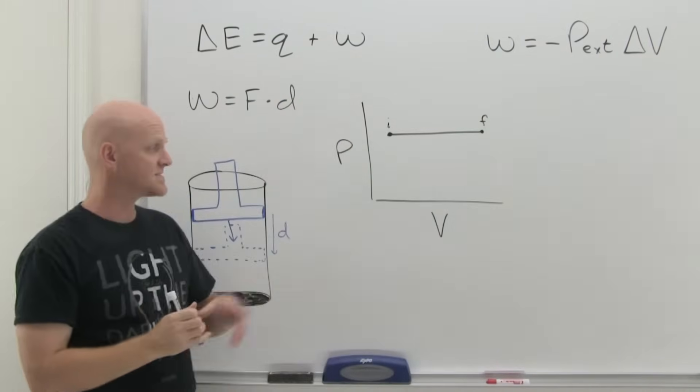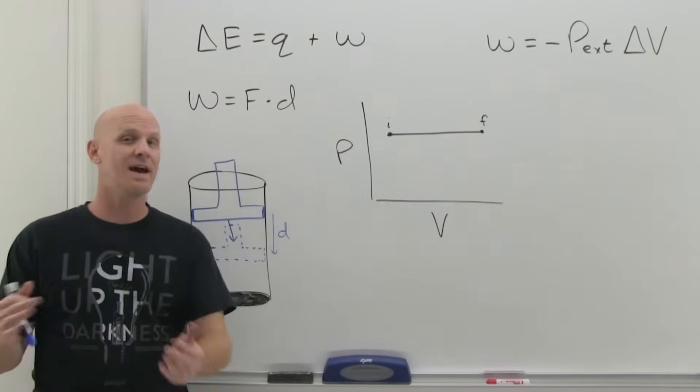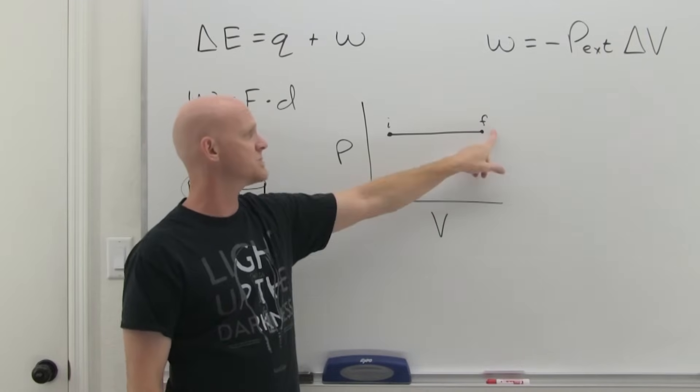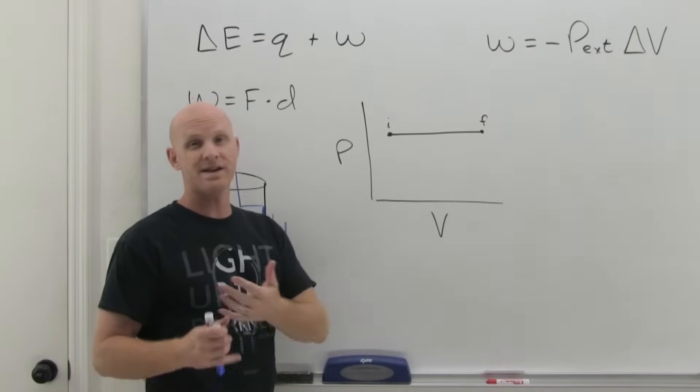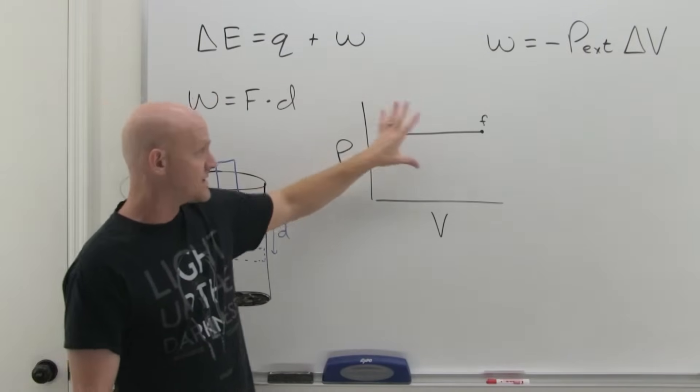In this case, our volume is increasing. And when your volume is increasing, that's when you're going to calculate negative work. Whereas if we'd been going the other direction, where this was the initial point and then some smaller volume the final point, that would have been a compression. And that's when work comes out positive, you might recall from the last lesson. So that's how you might predict your signs.